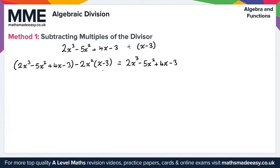We expand 2x squared with x minus 3, giving minus 2x squared plus 4x minus 3. Simplifying, we get x squared plus 4x minus 3.